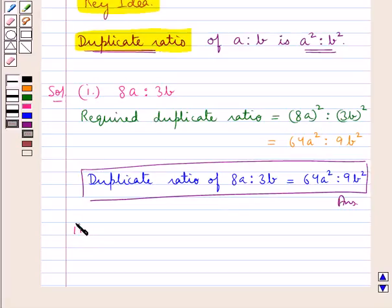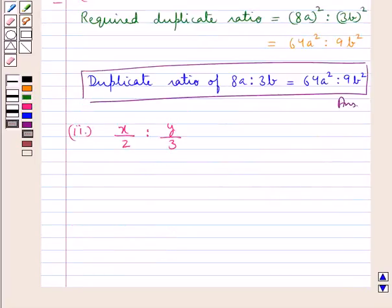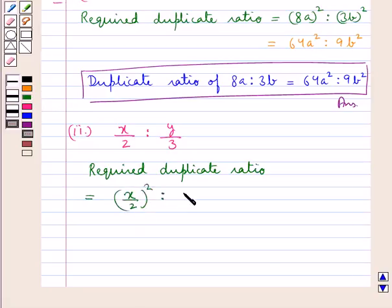Now, consider the second part in which we are given the ratio x upon 2 is to y upon 3. Let us now find out the duplicate ratio for this ratio. So, the required duplicate ratio is equal to x upon 2 whole square is to y upon 3 whole square.